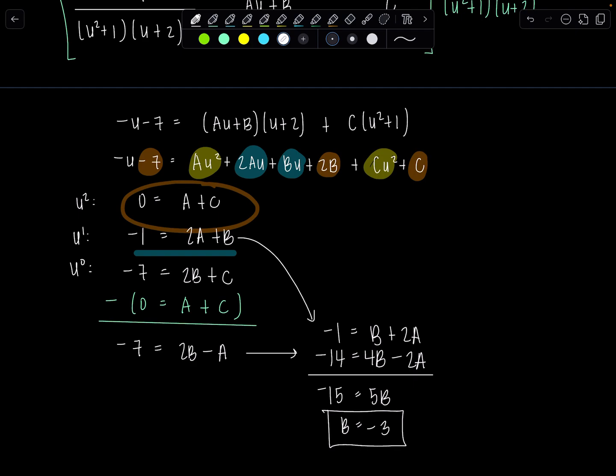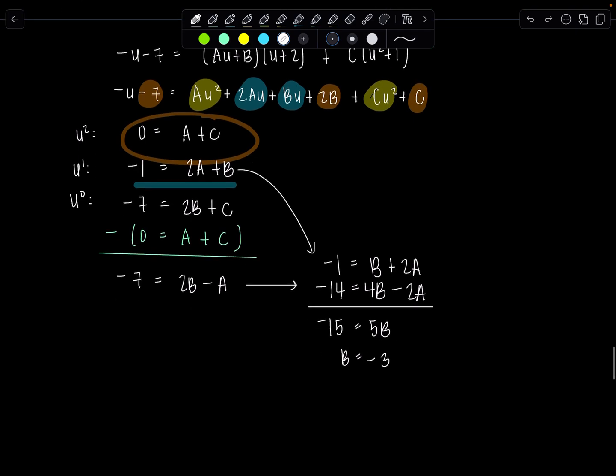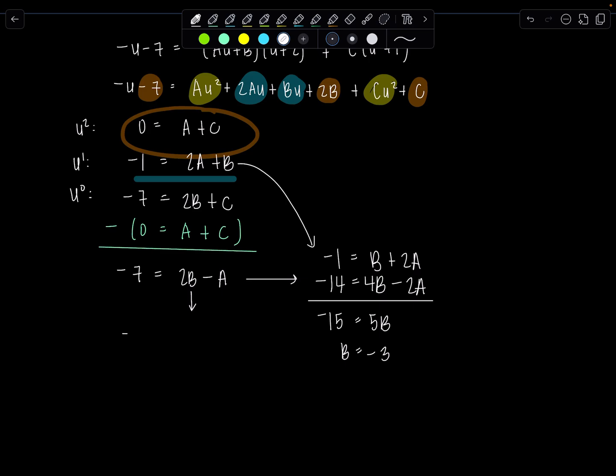If b is negative 3 then let's see I can just come back here. Negative 7 equals negative 6 minus a. Move over the negative 6, negative 1 is negative a. So a is 1. And then if a plus c is 0 then c is negative 1.